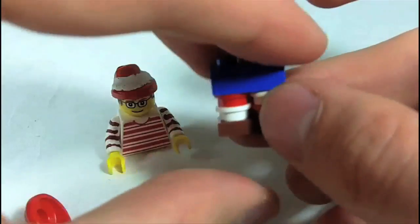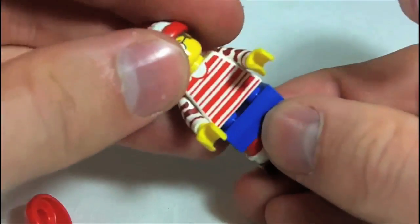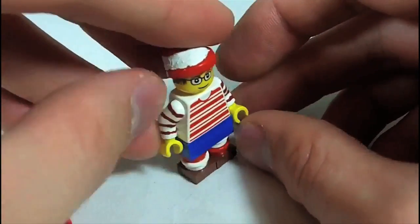And then two 1x1 square brown plates on the bottom for shoes. So, those are her stockings and shoes, and her little skirt there.